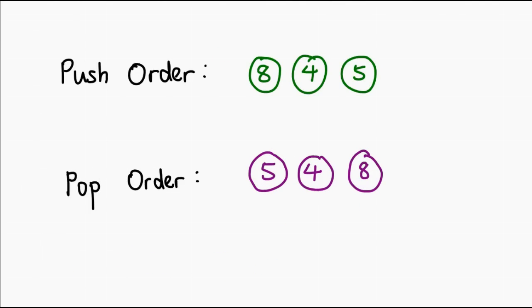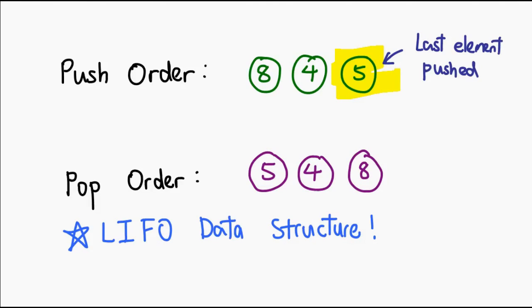This behavior is the reason why people call the stack a LIFO structure, or last-in, first-out structure. Why do we call it that? Well, simply because the last thing we push onto the stack is the first thing we pop out of it. Therefore, we call it last-in, first-out.